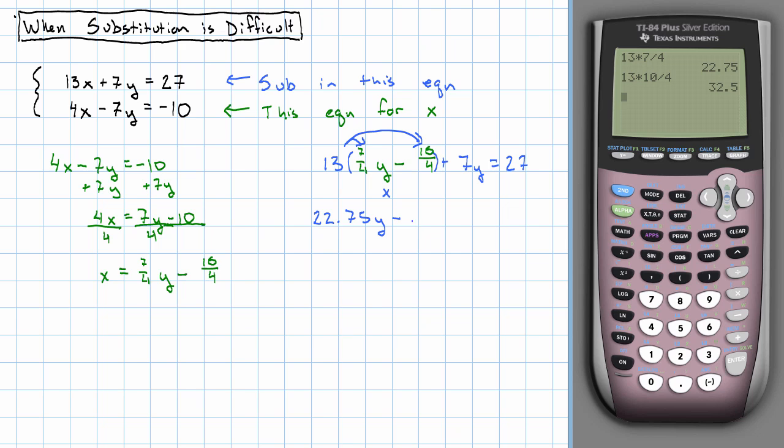Plus 7y equals 27. Combine the two terms in y. We'll have 29.25, we'll have 29.75y minus 32.5 equals 27.